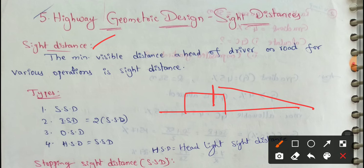Next, sight distance types. You have four major types of sight distances. Here, SSD is very important. Next, OSD is very important.